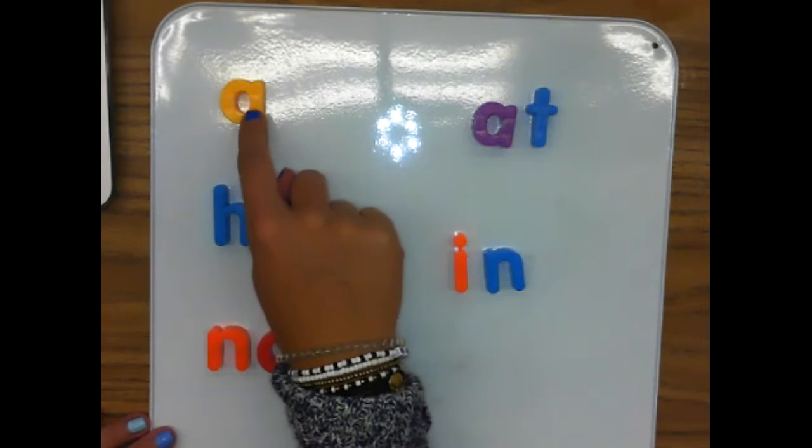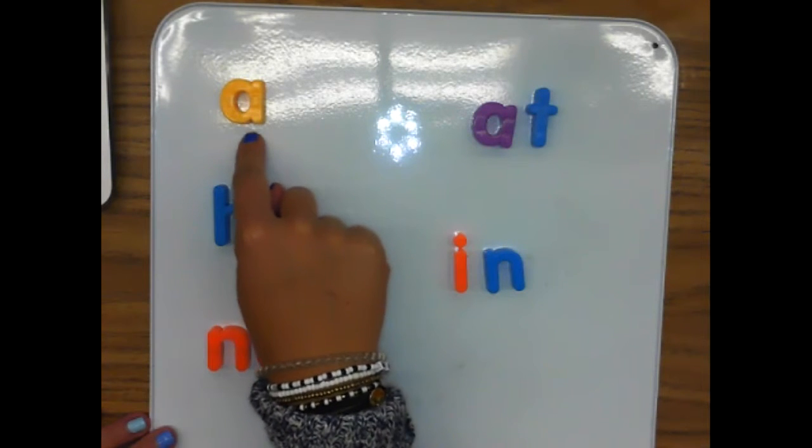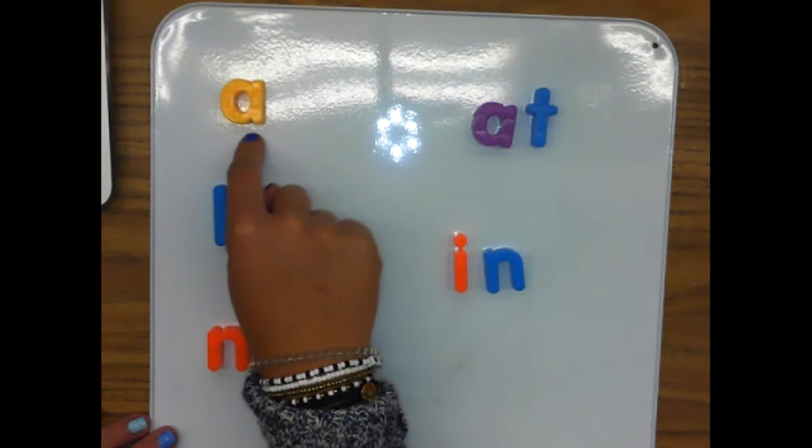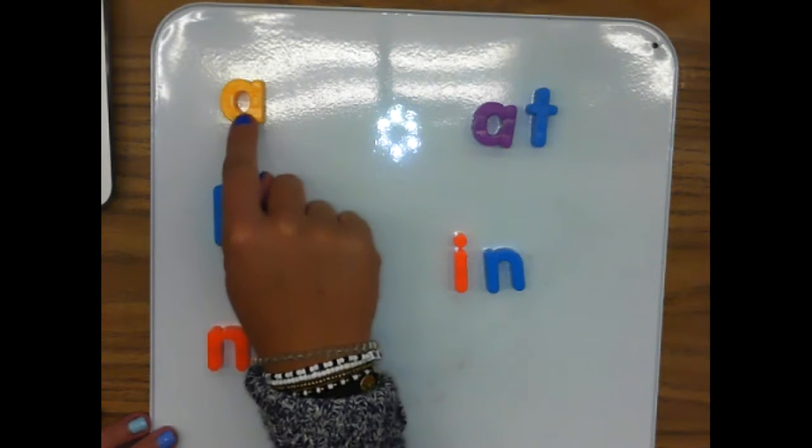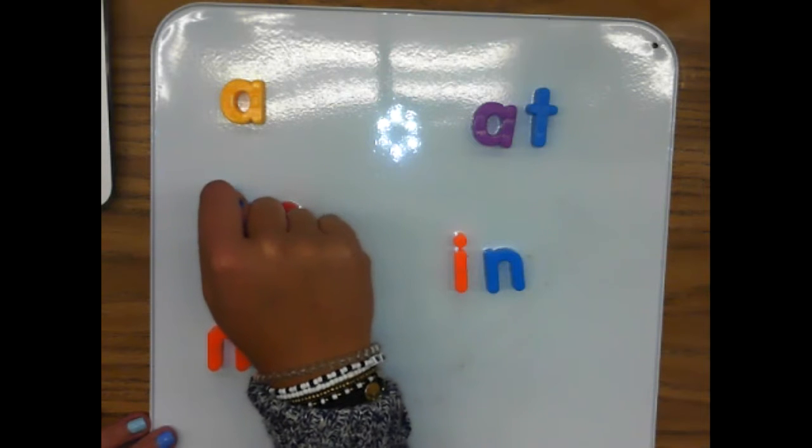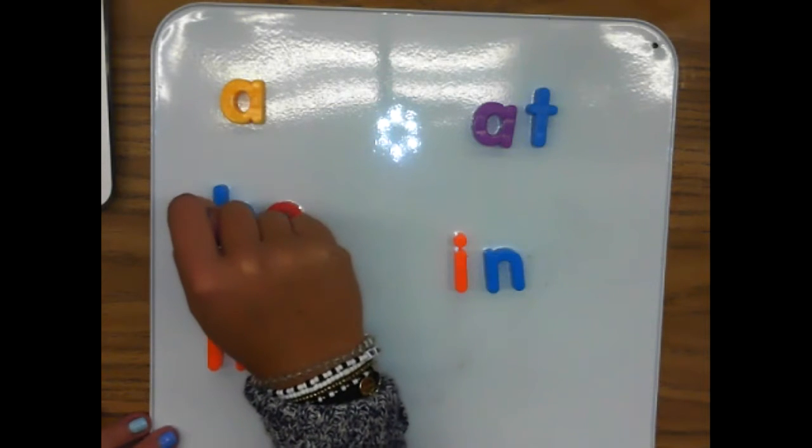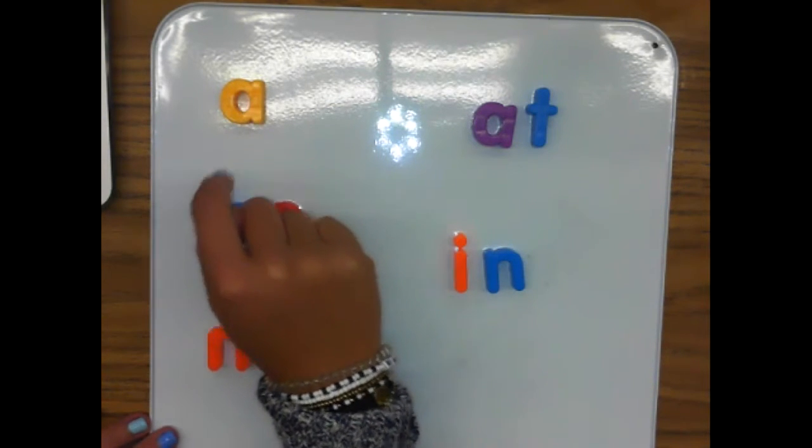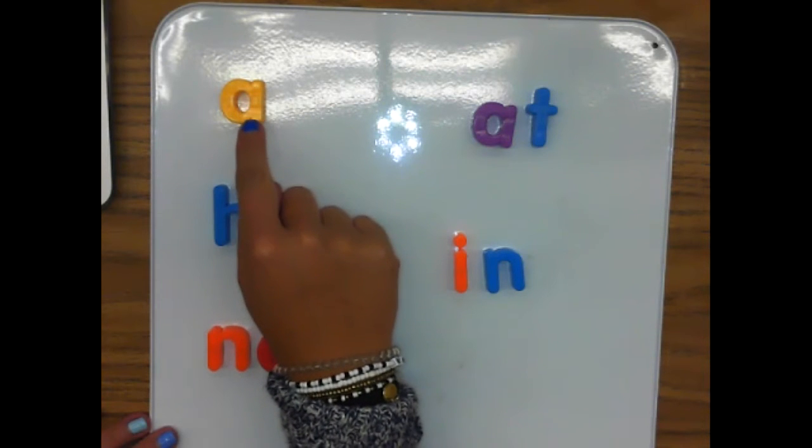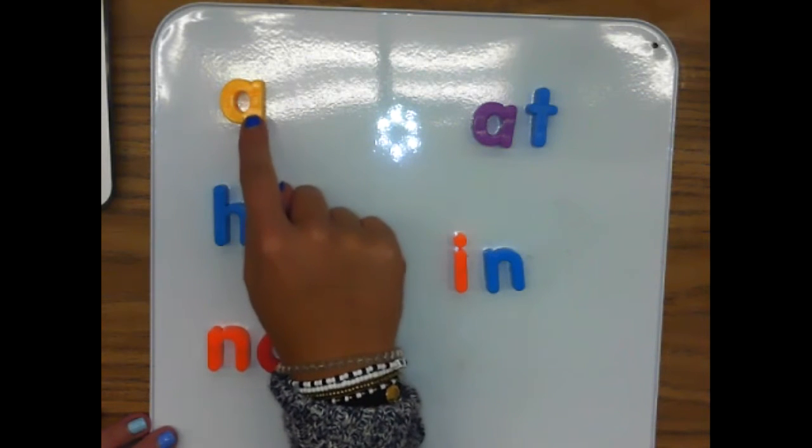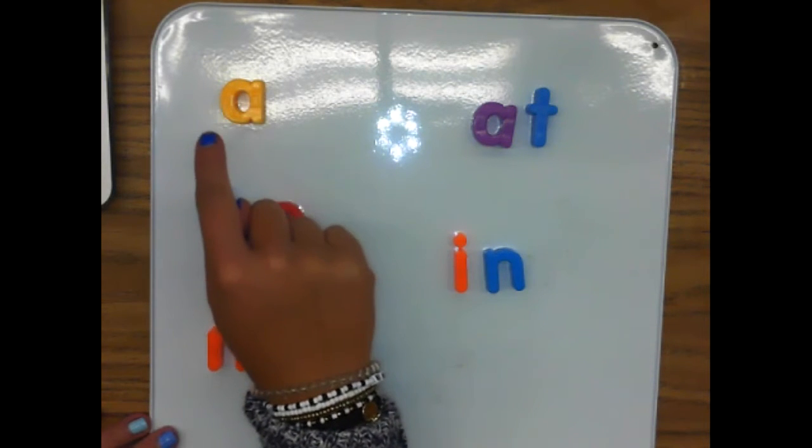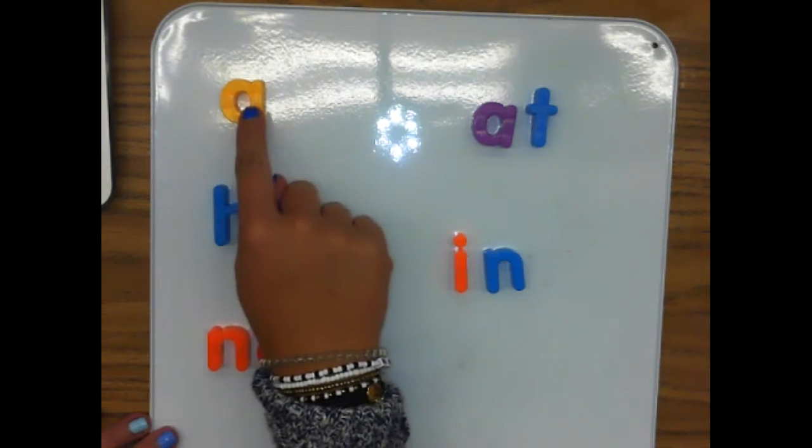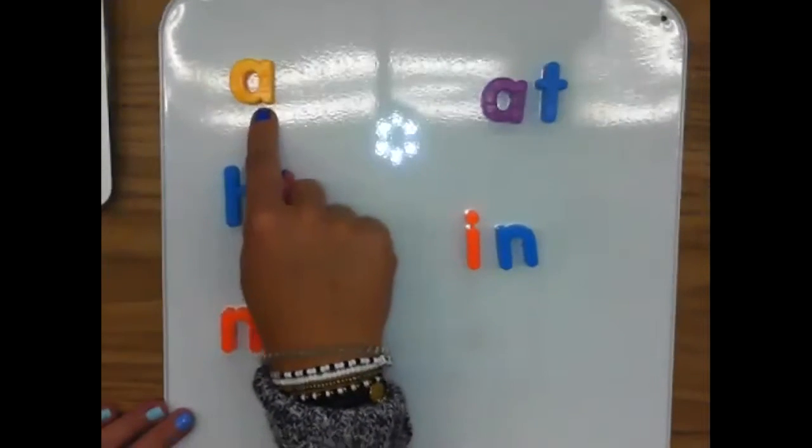Alright, let's start with this one. This is the word a, say a. Like I have a brother or this is a cat. Let's spell it, ready? A spells a, a spells a, say it with me. A spells a, that one's easy.